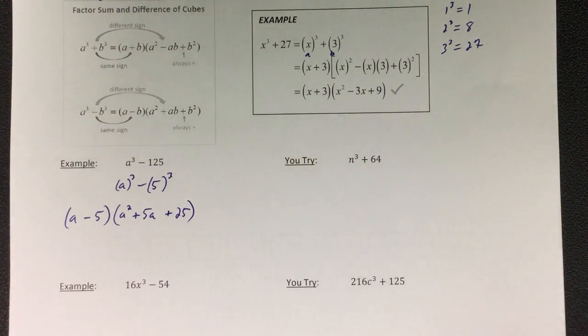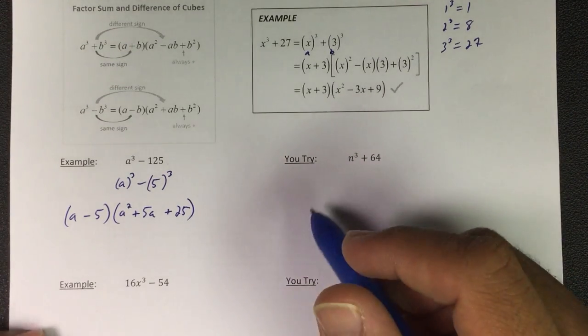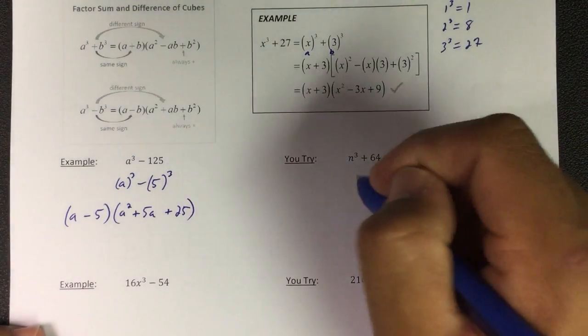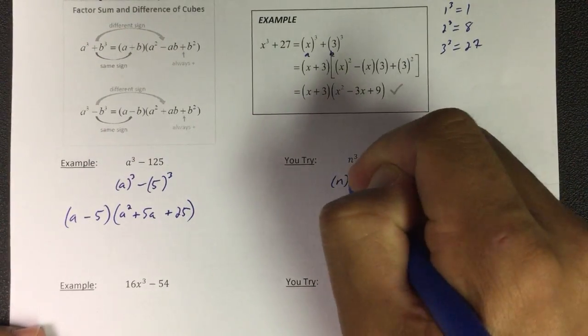Looking at this one, this is again n cubed plus 4 cubed. If you have this whole list, you could see that faster.